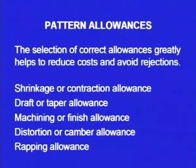Let us see what are the pattern allowances. As I already told, the pattern is the replica of the final casting that we are going to make. However, it is modified in certain ways in view of the allowances and in view of the core prints. The pattern allowances are: one is shrinkage or contraction allowance; second is draft or taper allowance; third is machining or finishing allowance; next, distortion or camber allowance; and finally, wrapping allowance. Let us see these things one by one.